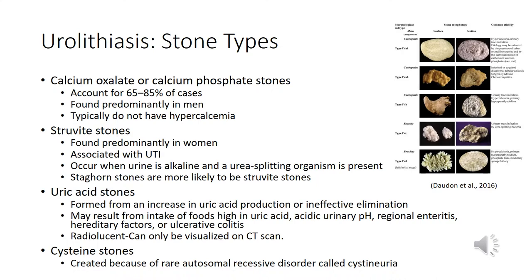Uric acid stones are formed from increased uric acid production or ineffective elimination of uric acid, often from foods high in purines. These stones are radiolucent, meaning they can only be visualized on CT scan — they cannot be seen on plain film or x-ray. Cystine stones are caused by a rare autosomal recessive disorder called cystinuria and are very rarely encountered.